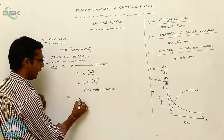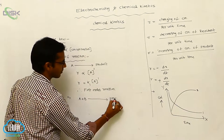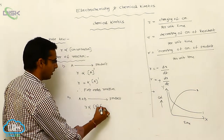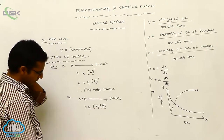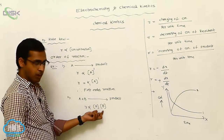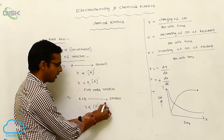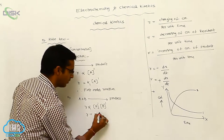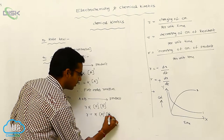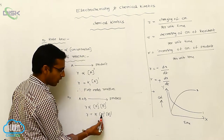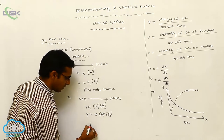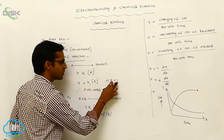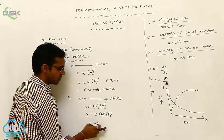If A + B is converted to product, the rate is directly proportional to concentration of A and concentration of B, each with power one. On removing the proportionality constant, R = K × [A] × [B]. Here the total rate depends on two terms, so the K value is two and this is a second order reaction. If K equals one, it is first order; if K equals two, it is second order reaction.